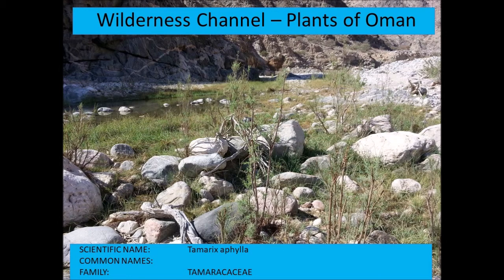Here's an example of Tamarix aphylla growing on the edge of a watercourse. You can see the very upright, sparsely vegetated stems — typical of Tamarix aphylla. They tend to occur right on the upper edge of where a watercourse would be.